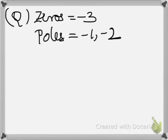So here we have the question: the zeros of the transfer function which we need to find out is minus 3, and the poles are minus 1 and minus 2. So we need to form a transfer function using these two things.